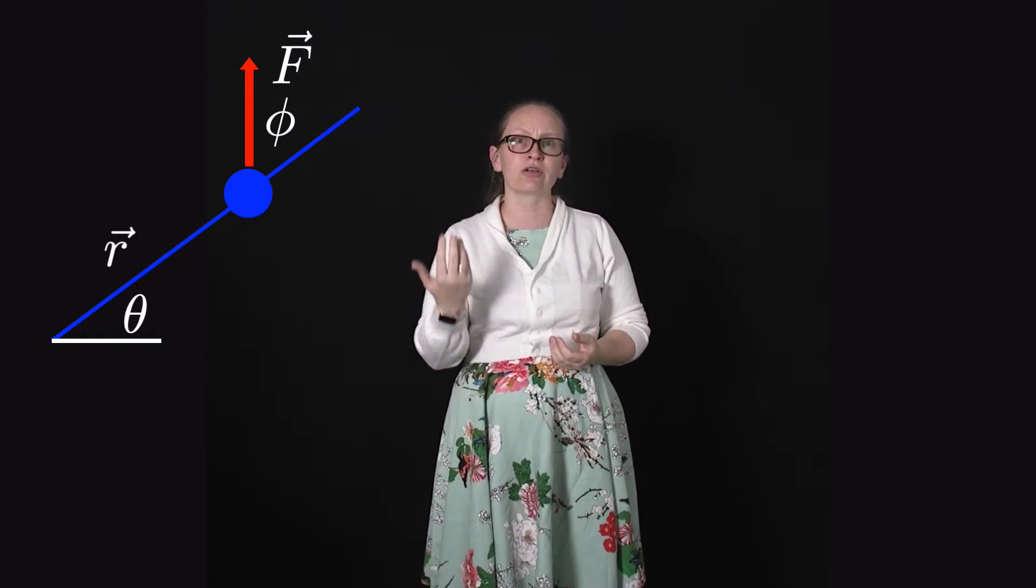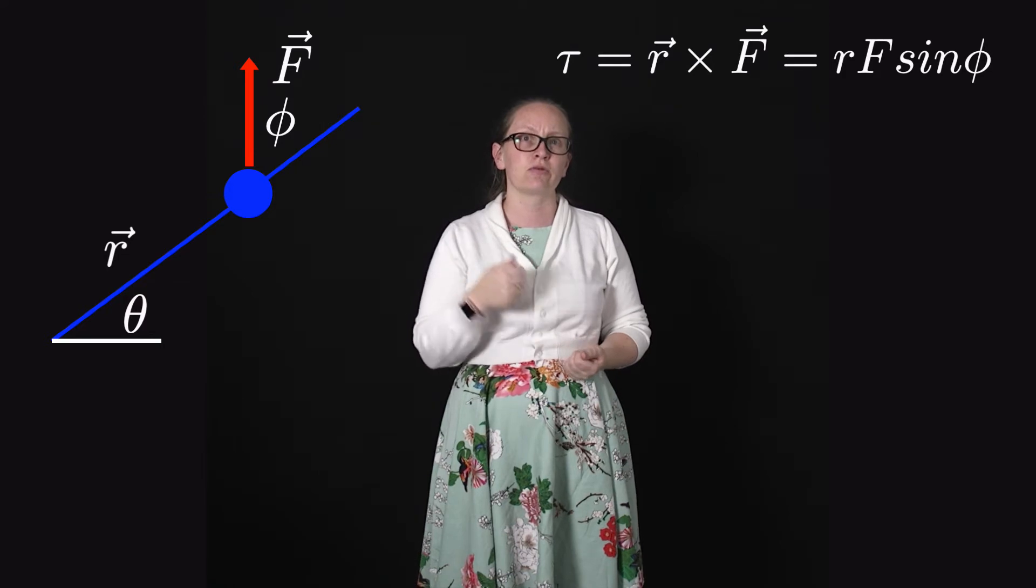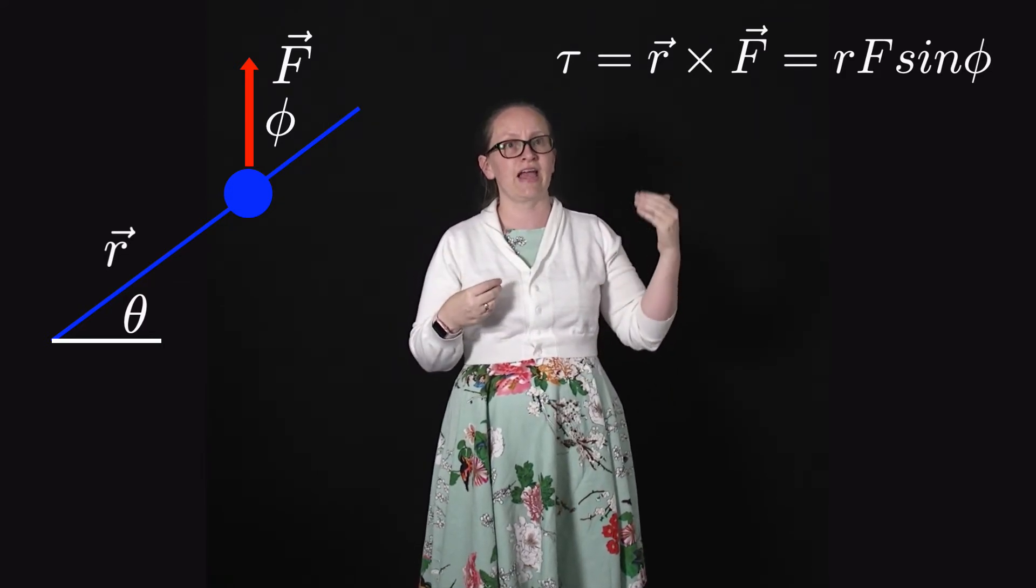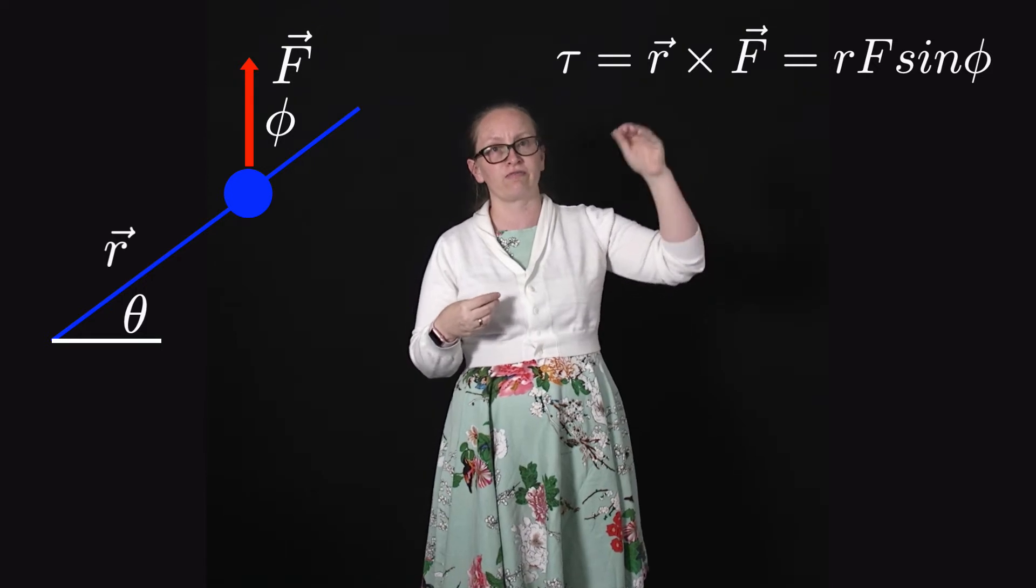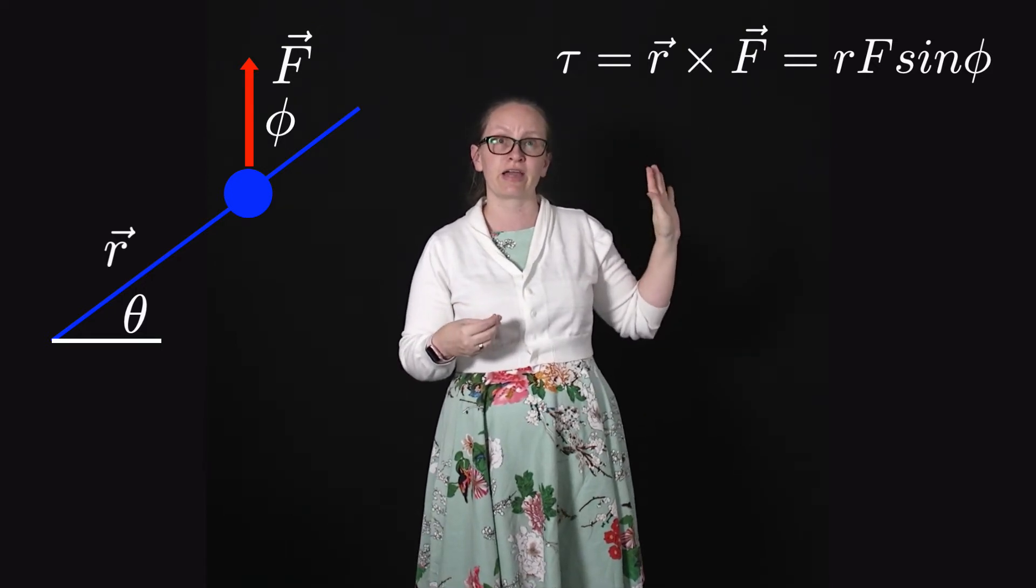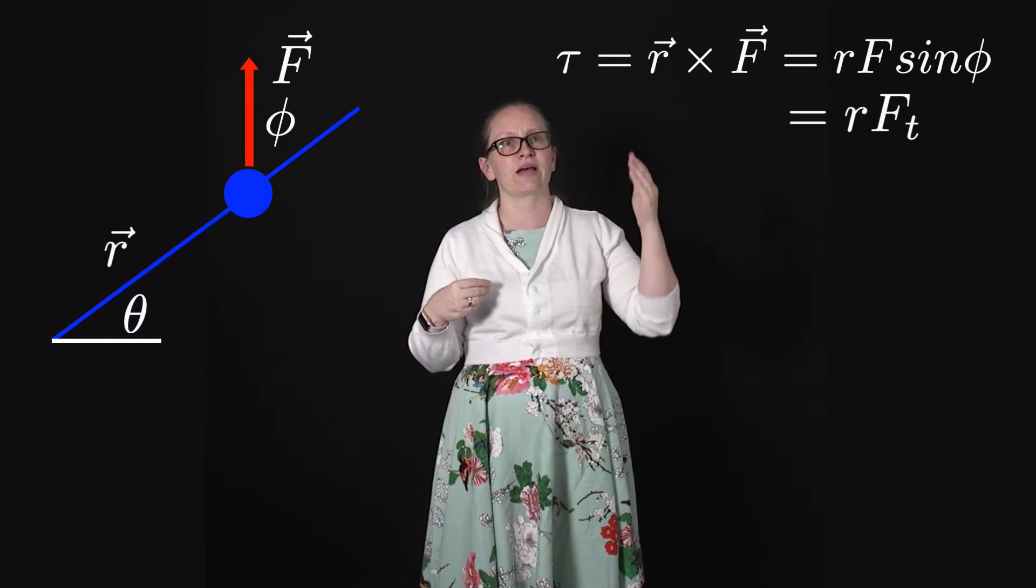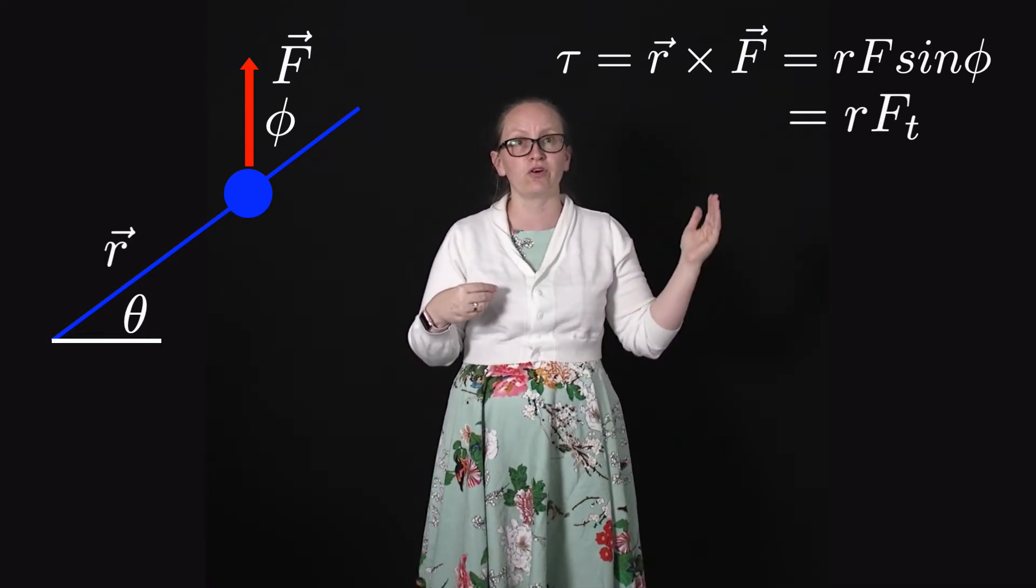Now if we want to calculate the torque that this force causes, we can use that the torque is equal to r cross F, which is equal to rF sin phi. Phi here is the angle between the radius and the force, just like we've shown in the diagram. So this is actually equal to r times the tangential component of the force.